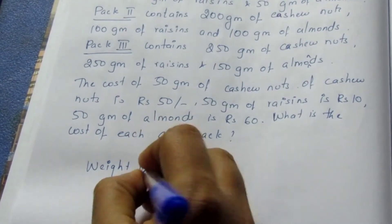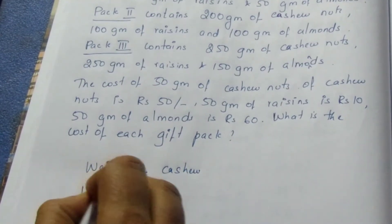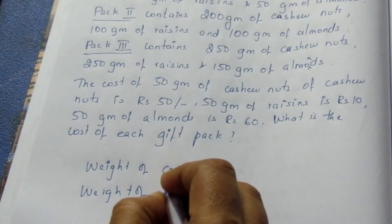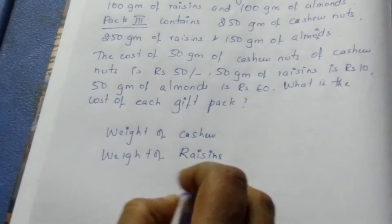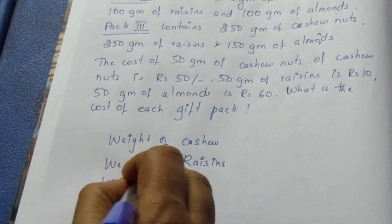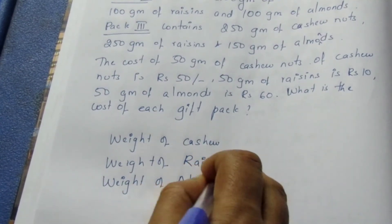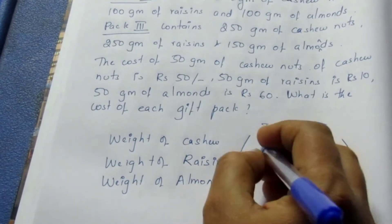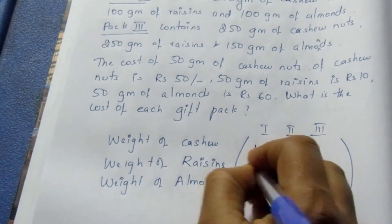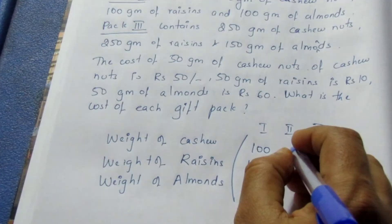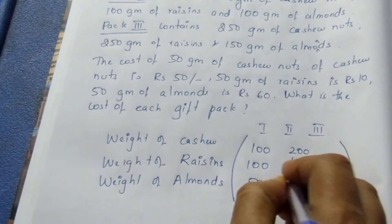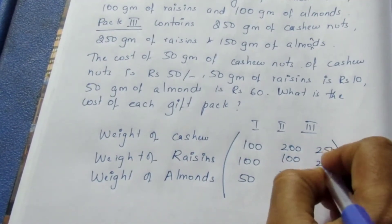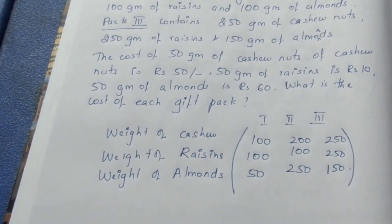Weight of cashew, weight of raisins, weight of almonds — for pack 1, pack 2, pack 3. The weights are: cashew: 100, 200, 250; raisins: 150, 100, 250; almonds: 50, 100, 150. So three varieties with weights in grams added to the matrix.